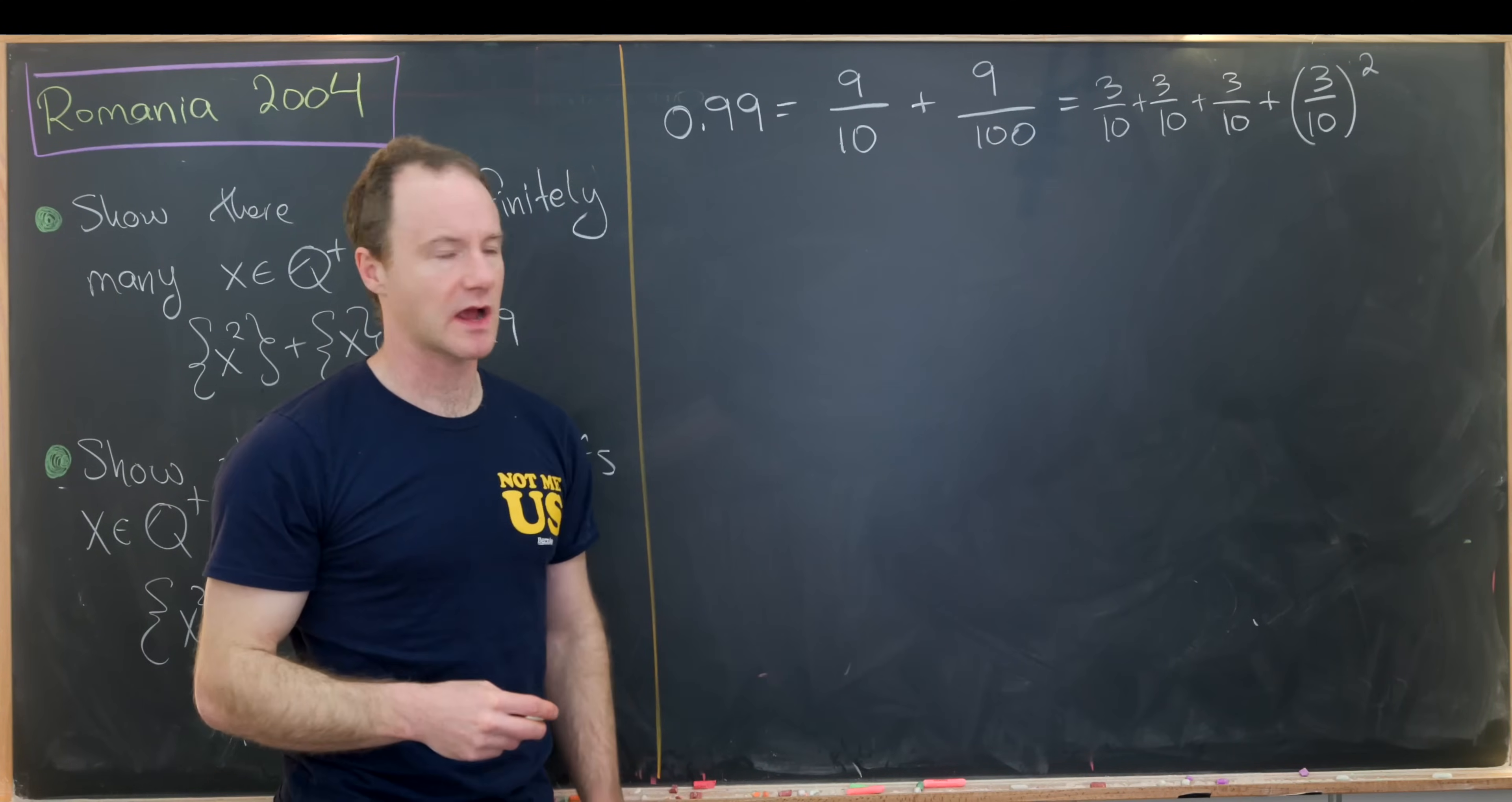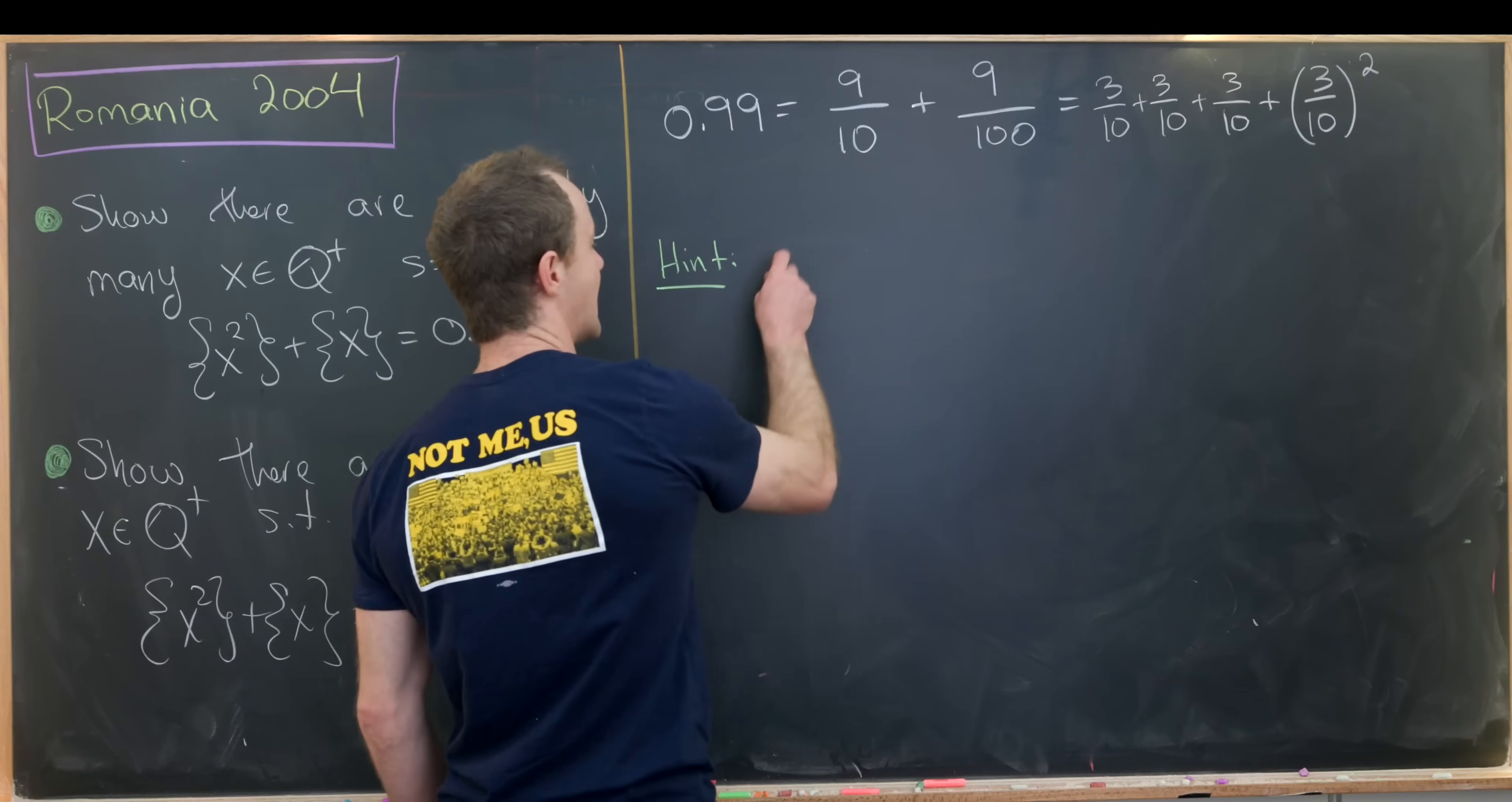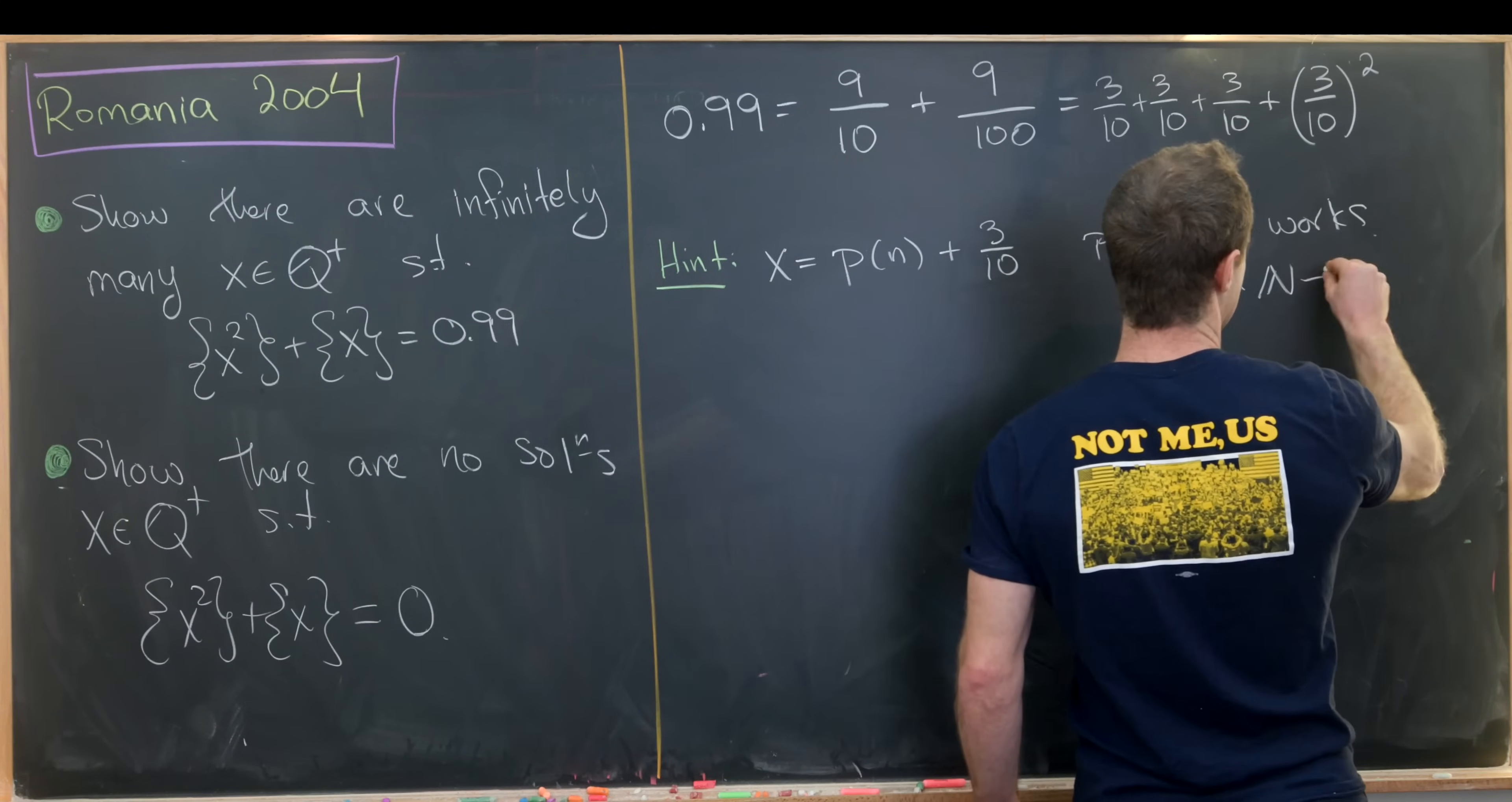So somehow along our work for this problem we should probably be squaring 3 over 10 and then we should be adding 3 over 10 somehow to itself 3 times. Working towards that, we have this hint built into our problem. And again, that hint is this 3 over 10 squared being the same thing as 9 over 100. Something like x equals p of n plus 3 over 10 plus 3 over 10 probably works. This p of n is a simple function that takes a natural number and gives a natural number.